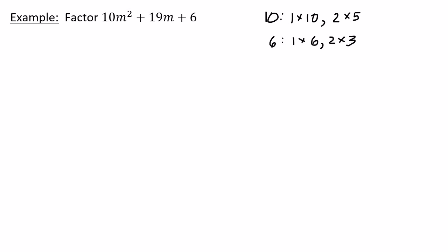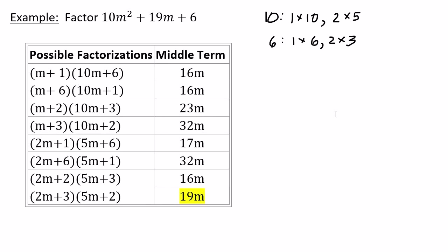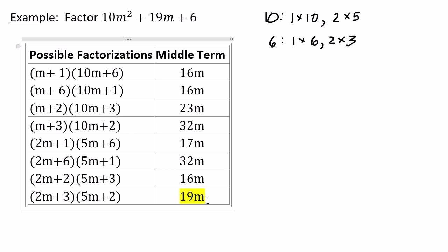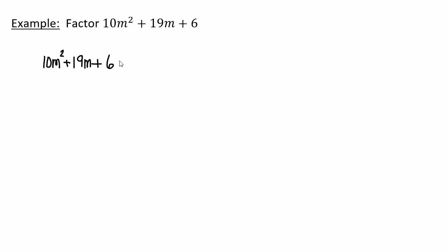This produces a lot of different possibilities to write down. Because the factor on m in the first binomial and on the second binomial must give 10m² as the first term and 6 as the last term, the question is about the middle term. Going through all the possible factorizations, the only one that works is (2m + 3)(5m + 2). So 10m² + 19m + 6 = (2m + 3)(5m + 2).